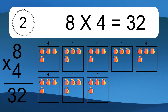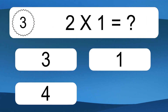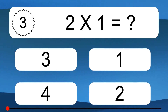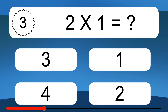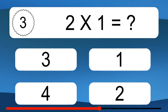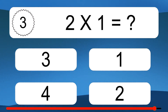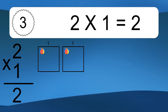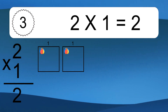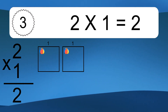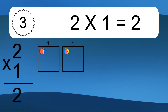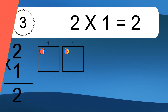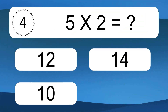This equals 32 balls. 2 times 1 equals what? We have 2 boxes, and each box has 1 colorful ball inside. If you count all the balls in all the boxes together, you will have 2 times 1 balls. This equals 2 balls.